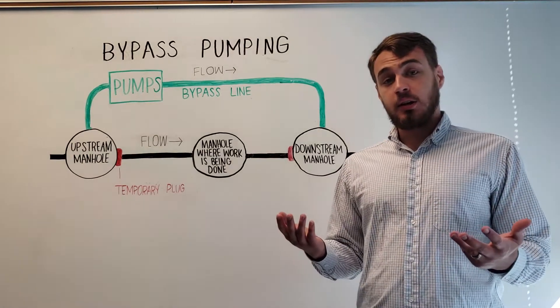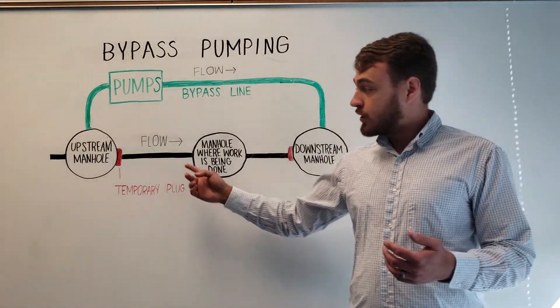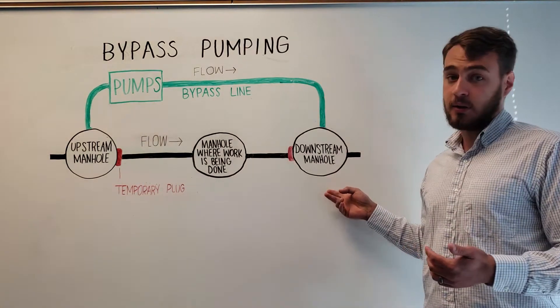So the first thing you need for bypass pumping is to stop your flows and this is accomplished through temporary plugs. One is placed in your upstream manhole which is your suction manhole and one is placed in your downstream manhole which is your discharge manhole.